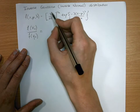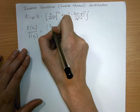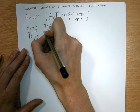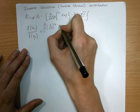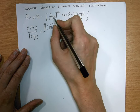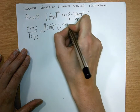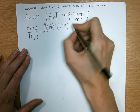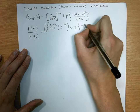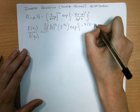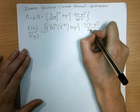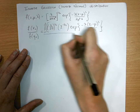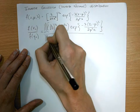We break the expression into two parts. We have (lambda over 2pi) to the power of one half, times the product from i equals 1 to n of x_i to the power of minus 3/2, times the exponential of minus (x_i minus mu) squared over (2 mu squared x_i). We do the same in the denominator but in terms of y_i instead of x_i.